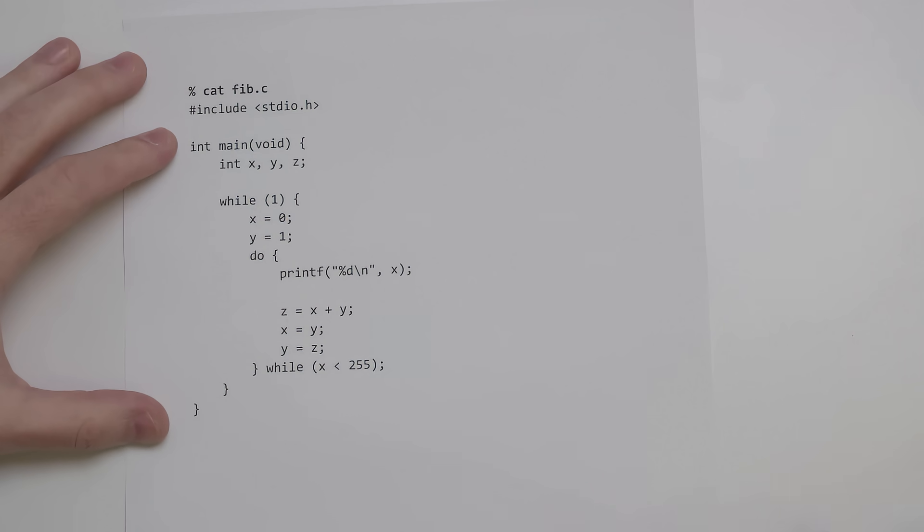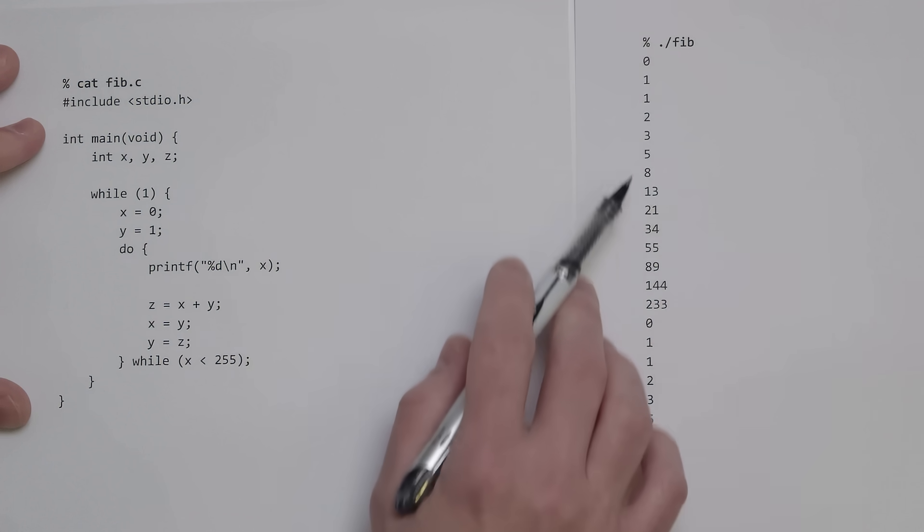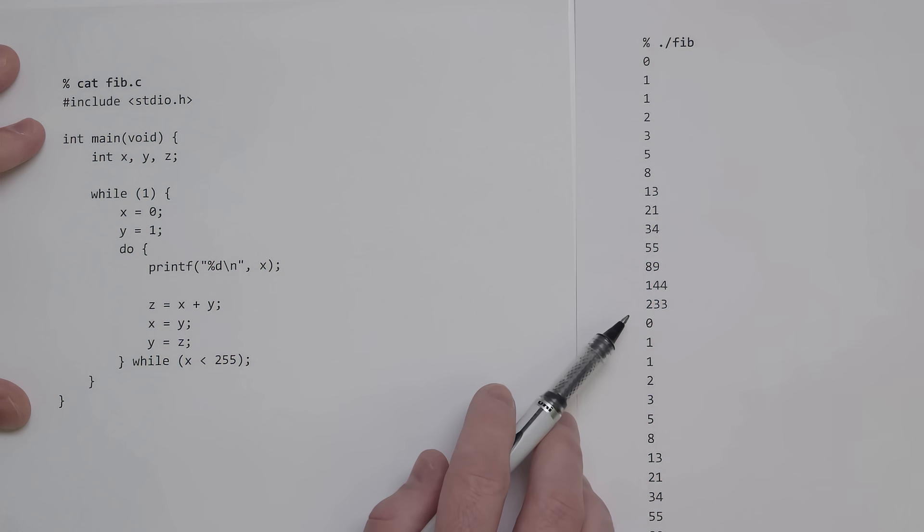First of all, just to see what the output looks like when we run it, it prints out Fibonacci numbers up to 255, and actually 233 is the largest Fibonacci number that's less than 255.